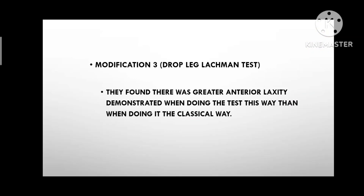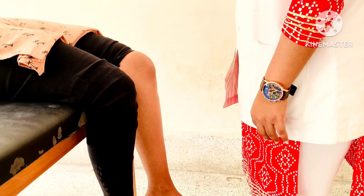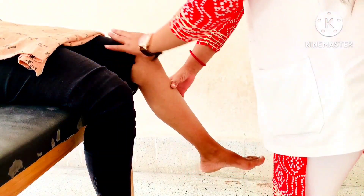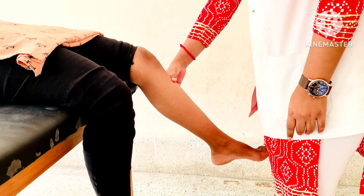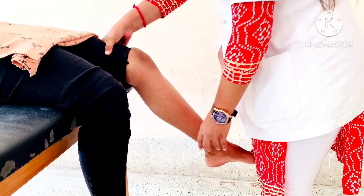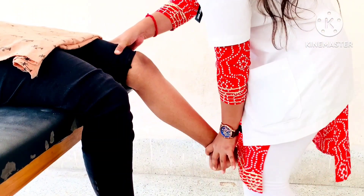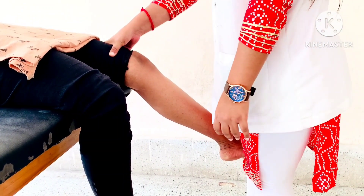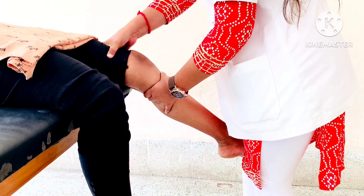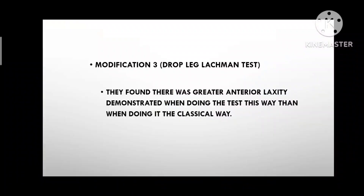Modification 3: Drop Leg Lachman Test. Patient Position: supine lying, the leg to be tested is abducted off the side of the examining table and the knee is flexed to 25 degrees. One of the examiner's hands stabilizes the femur against the table while the patient's foot is held between the examiner's knees. The examiner's other hand is then free to apply the anterior translation force. It was found there was greater anterior translation demonstrated when doing the test this way than the classical way.